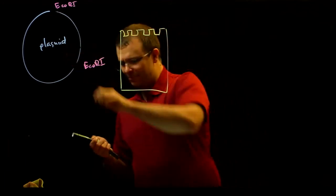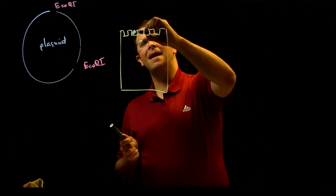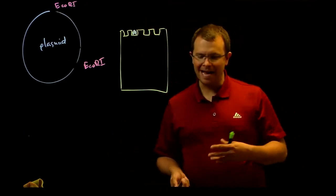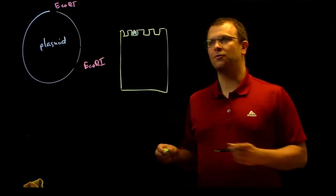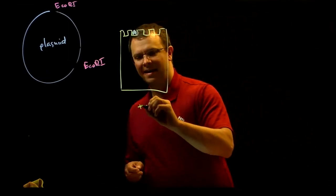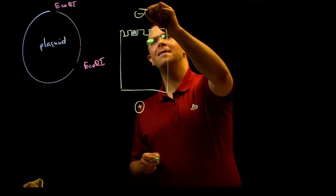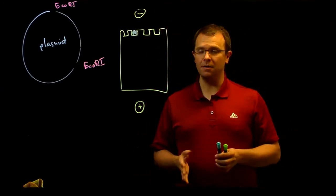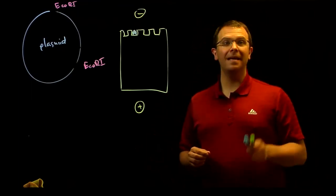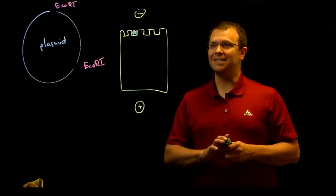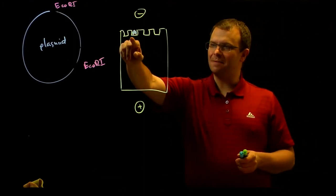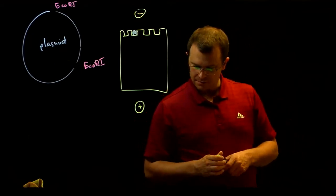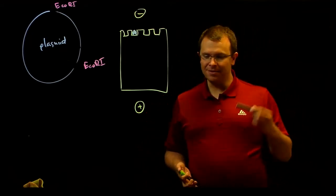Then I take my sample of DNA and squirt it into one of those wells. Next, I apply an electric field across the gel. I'll put the positive electrode down there and the negative electrode up here. Remember, the DNA backbone is negatively charged.